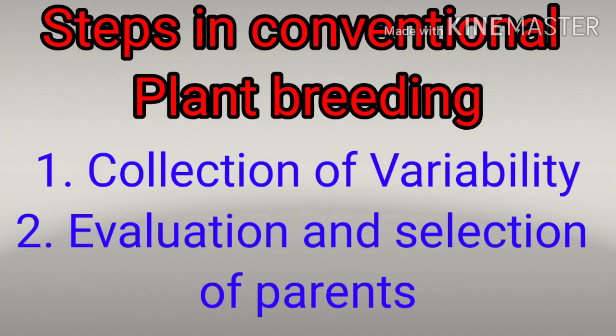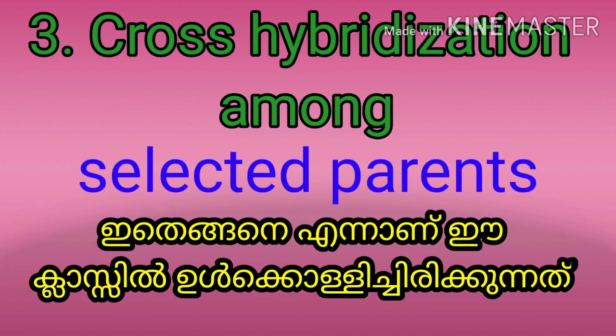The traditional steps followed by plant breeders in a plant breeding program are: 1. Collection of Variability, 2. Evaluation and Selection of Parents, 3. Cross Hybridization Among Selected Parents.